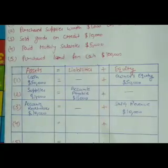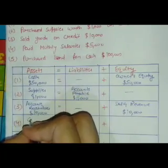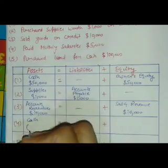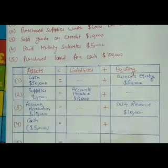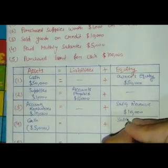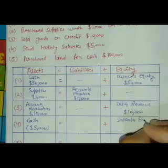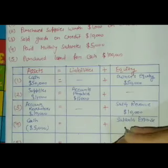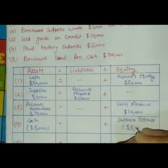Next, paid monthly salaries of five thousand dollars. This will result in decreasing the asset side by five thousand dollars, as there is an outflow of cash of five thousand dollars in the form of salaries. It will also decrease the equity side by five thousand dollars, as expenses decrease equity.